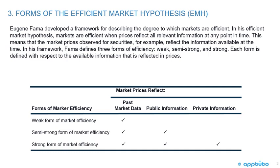In his framework, Fama defines three forms of efficiency: weak, semi-strong, and strong. Each form is defined with respect to the available information that is reflected in prices.